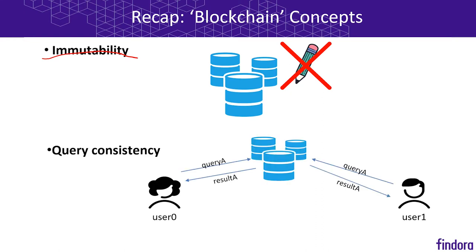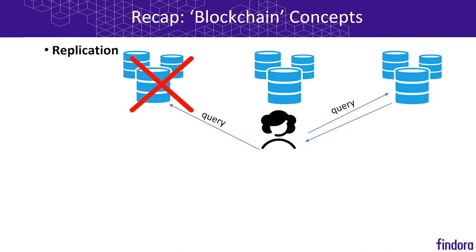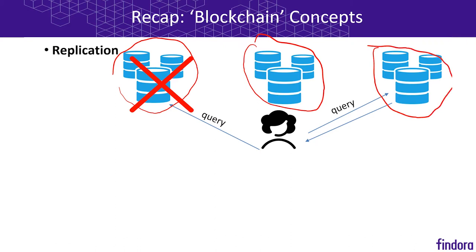The second concept is called query consistency. If we have two users, user 0 and user 1, and they issue the same query to the blockchain, then they should expect to get the same result. The next concept is called replication, which means that a copy of the blockchain is stored on many different servers. Even if one server becomes unavailable because its hard drive failed or its internet connection was lost, a user can still query another server and get an answer to a specific query.